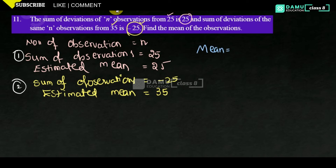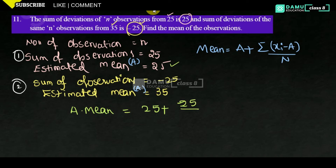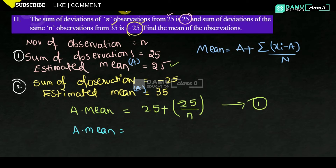The formula for arithmetic mean is: mean equals assumed mean plus average of deviations. For the first case: arithmetic mean equals 25 plus 25 divided by n. For the second case: arithmetic mean equals 35 plus (minus 25) divided by n. These give us equations 1 and 2.